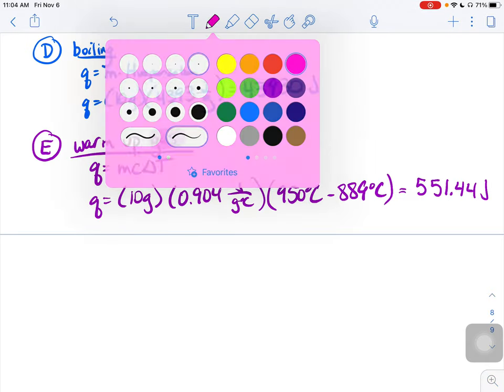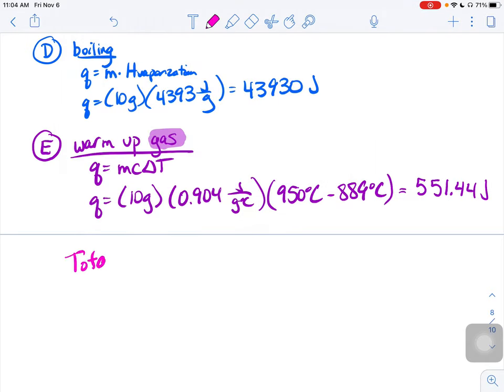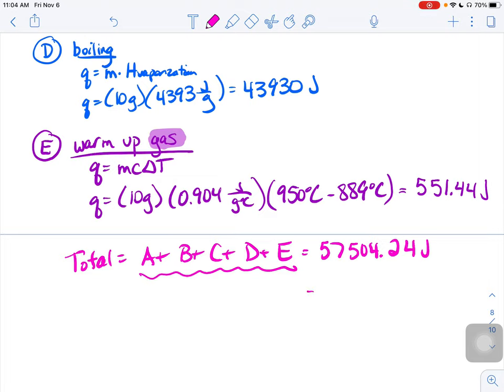If we add up all the pieces of that puzzle, if we do A plus B plus C plus D plus E, all of them, we would get 57,504.24 joules. And then sig figs, since I was just doing an addition step here, addition rule, say round to the one with the least number of decimal places. Since some of our values for A, B, C, D, E don't have any decimal places, that's how I'm going to round my answer, 57,504 joules.